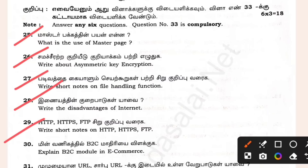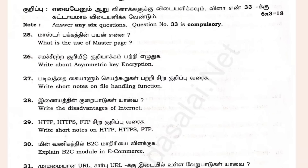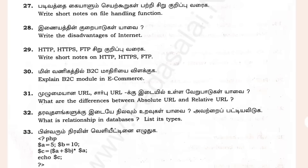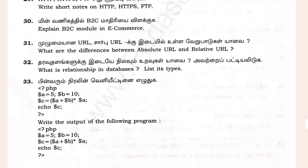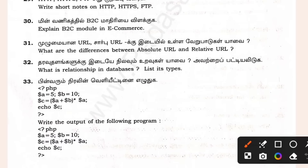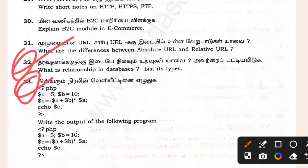Symmetric key and file handling functions. B2C module in e-commerce — 5 is easy, 45 is easy. Data types and residency schedule — 63 is easy. There is no compulsory question.